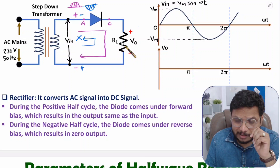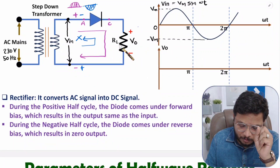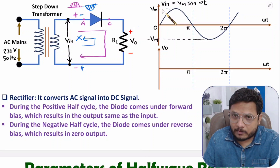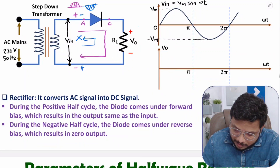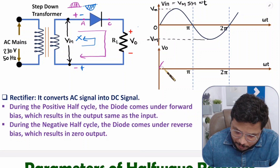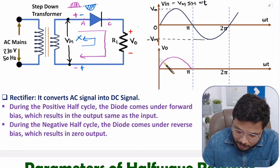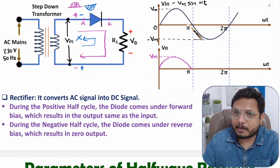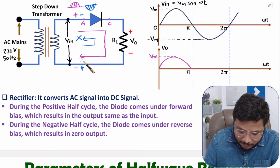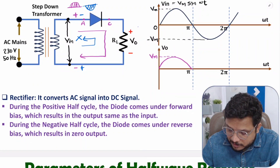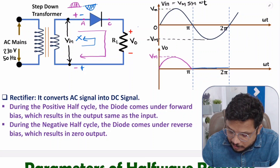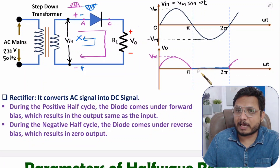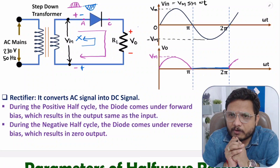Now let us understand this with respect to waveforms. During the positive half cycle, VO equals VIN, so the output waveform is similar to the input, with maximum voltage Vm, from zero to π. During the negative half cycle, the diode is in reverse bias, so the output voltage is zero. That is how the basic waveforms and working of the half wave rectifier appear.